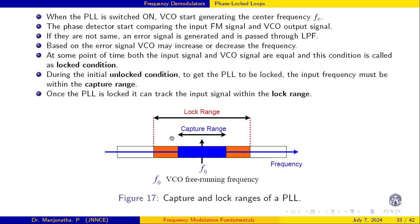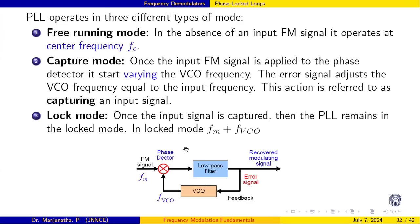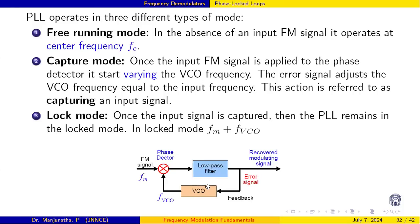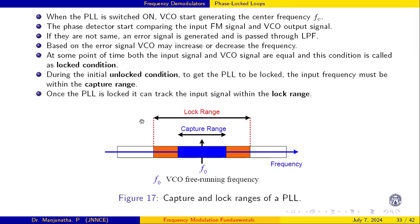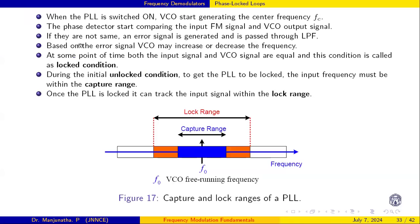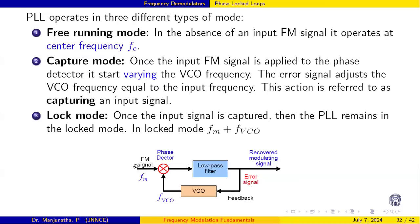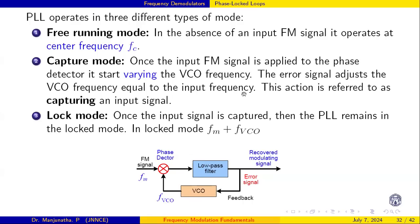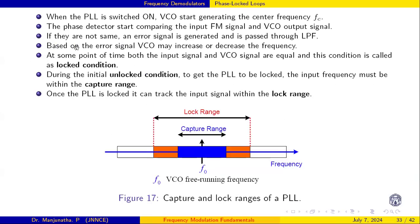When the PLL circuit is first switched on, the VCO starts running at the center frequency. The FM signal and the VCO signal are compared from the beginning. If these two are not the same, an error signal is generated. Based on this error signal, passed through the low pass filter, the VCO increases or decreases its frequency to reduce the error.